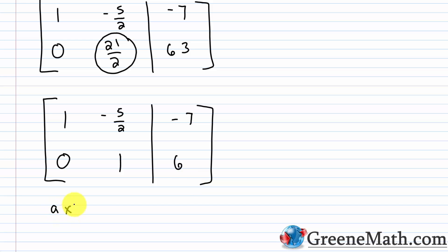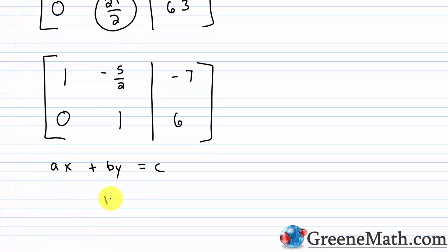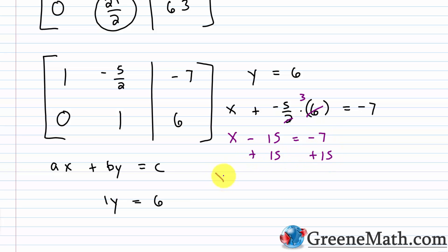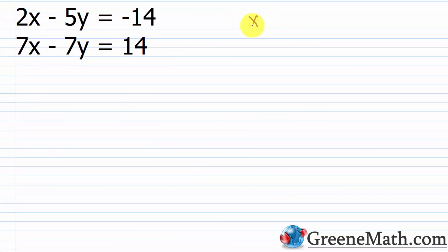From the bottom row, 1y equals 6, so y equals 6. Substituting into the top row: x plus negative 5 halves times 6 equals negative 7. Since 6 divided by 2 is 3, negative 5 times 3 is negative 15, so x minus 15 equals negative 7. Adding 15 to each side gives x equals 8. The solution is x equals 8, y equals 6, or the ordered pair (8, 6).